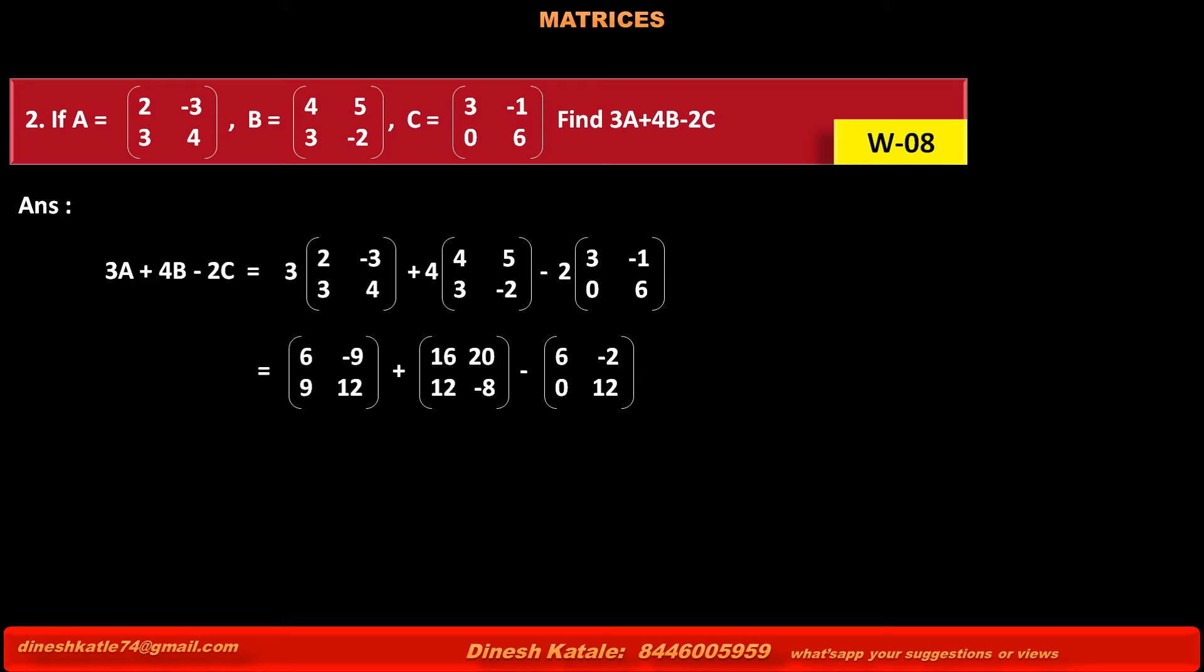Minus multiplying matrix C by 2, we get 2×3 is 6, 2×(-1) is -2, 2×0 is 0, 2×6 is 12.